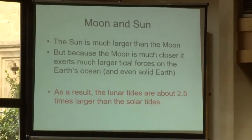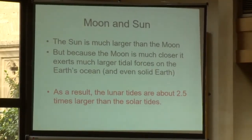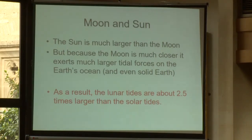The sun is much larger than the moon, obviously, but that r cubed term is the real killer. The moon is much closer, so it exerts much larger tidal forces on the Earth's ocean and even on the solid earth underneath. As a result, the lunar tides are about two and a half times larger than the solar tides. The moon is much more important.